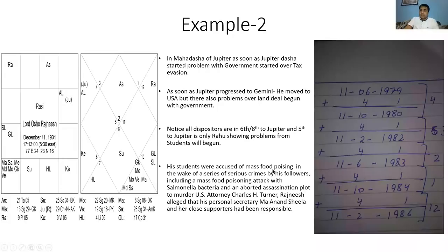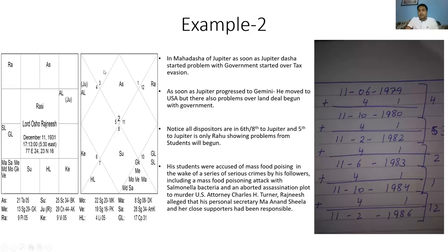The moment Jupiter entered Pisces, from 1984 to 1986, this was the major time period when his students were accused of serious crimes — including a mass food poisoning attack with bacteria and an aborted assassination plot to murder a US attorney. This all happened because Jupiter had Rahu in its fifth house. The moment Jupiter activated it, making Jupiter the dasha lagna, you can see why it all occurred during this period from 1984 to 1986. I have not used Navamsha in these cases — you can go ahead and do it; you'll find it absolutely working.